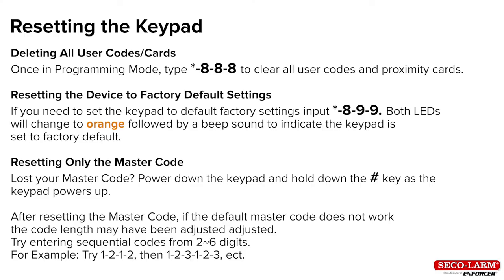How to remove user codes. To clear user codes, once in programming type in star 888 to clear all previous user codes and proximity cards. How to factory reset: if you need to reset the keypad to default factory settings, input star 899. Both LEDs will go orange followed by a beep to indicate the keypad is now set to factory default. If you ever lose your master code, power down the keypad and hold down the pound key as the keypad powers up. If the default master code does not work, the code length could have been adjusted — try entering sequential codes from 2 to 6 digits, for example 1212, 123, and so on.